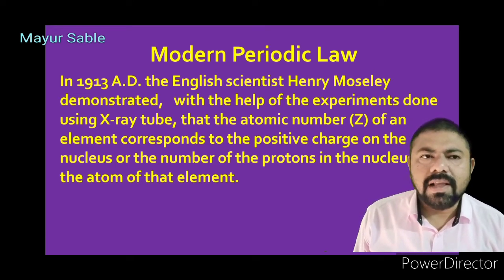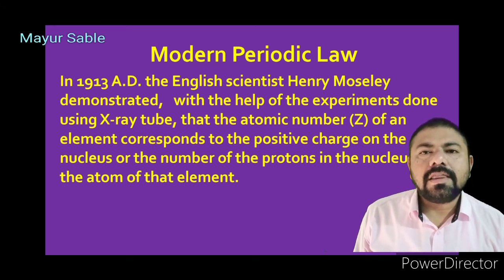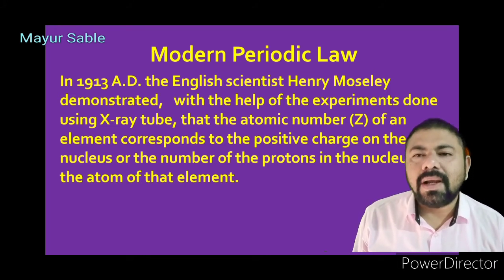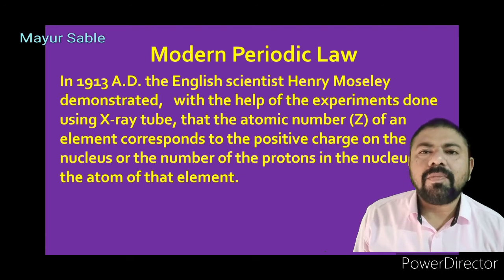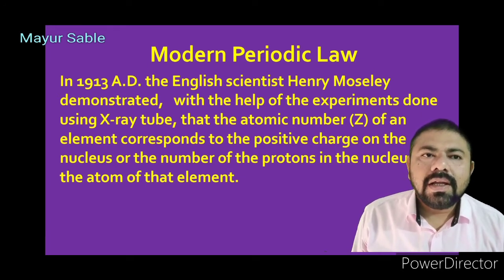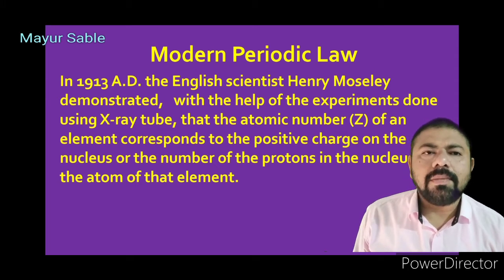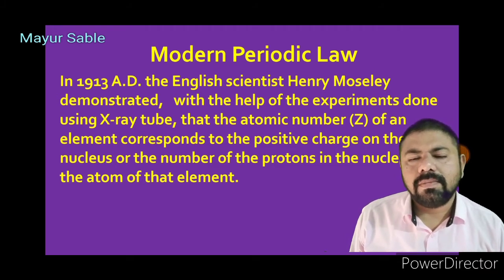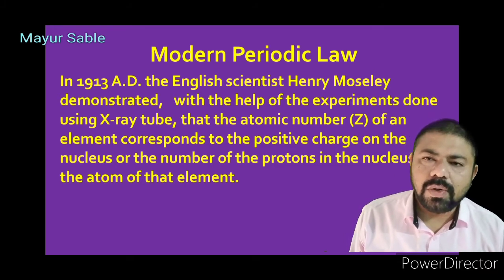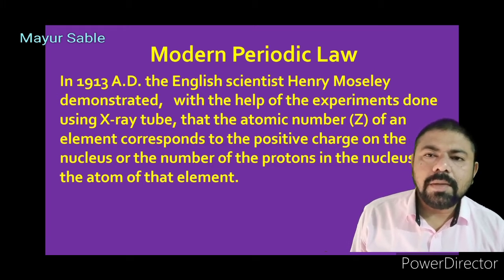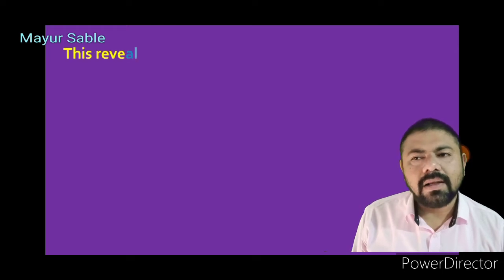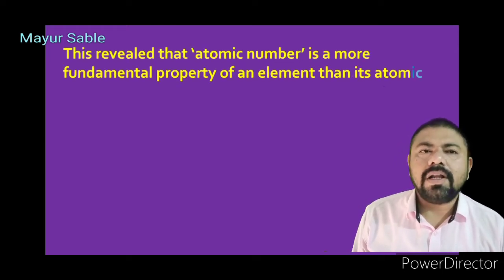But in the year 1913, Sir Henry Moseley demonstrated through experiments carried out with the help of an x-ray tube that the atomic number of an element corresponds to the positive charge of the nucleus — which is nothing but the number of protons. This revealed a resemblance between the number of protons in the nucleus and the electrons revolving around it, showing that atomic number is a more fundamental property than atomic mass.